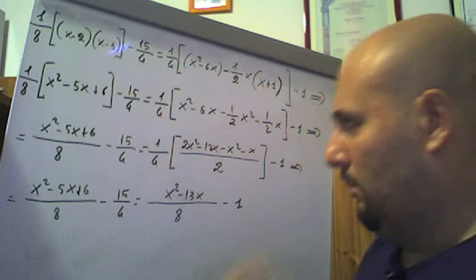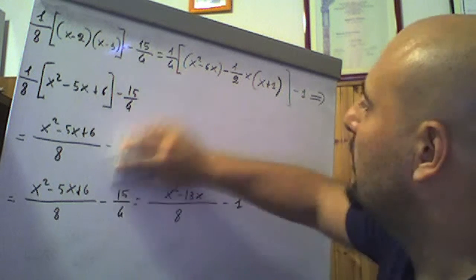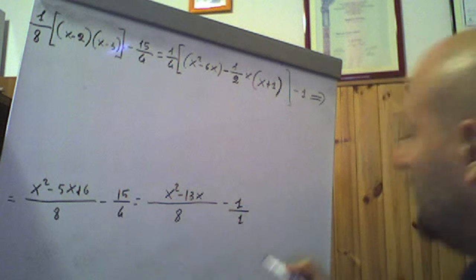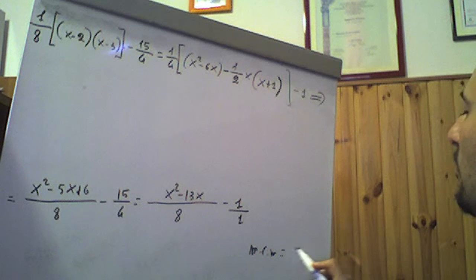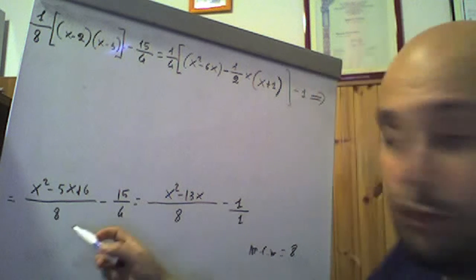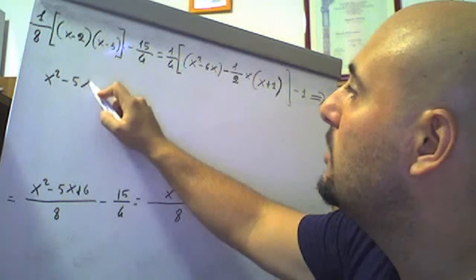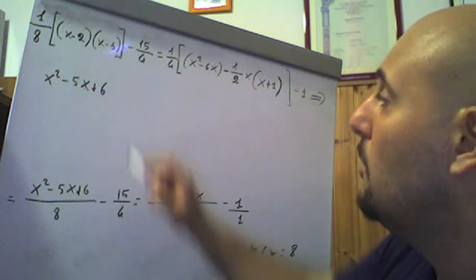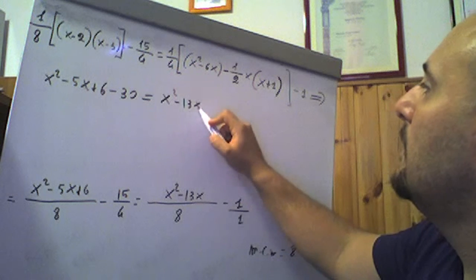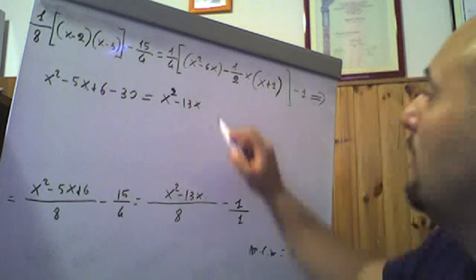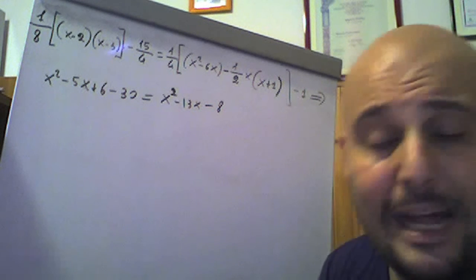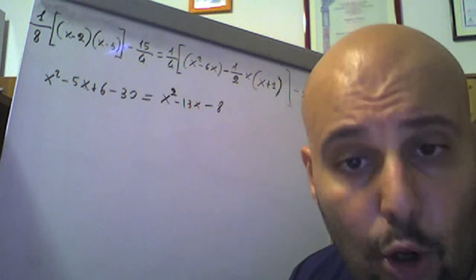Possiamo eliminare le frazioni facendo il minimo comune multiplo tra i denominatori. Abbiamo un 8, un 4, un 8 e un 1. Il minimo comune multiplo tra 8, 4 e 8 è evidentemente 8. Quindi: 8 diviso 8 è 1 per (x²-5x+6) fa (x²-5x+6); 8 diviso 4 è 2 per -15 fa -30; uguale: 8 diviso 8 è 1 per (x²-13x) fa (x²-13x); 8 per -1 fa -8. Il denominatore non c'è più: ho applicato il secondo principio di equivalenza, moltiplicando ambo i membri per 8.